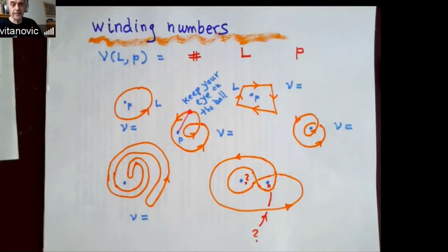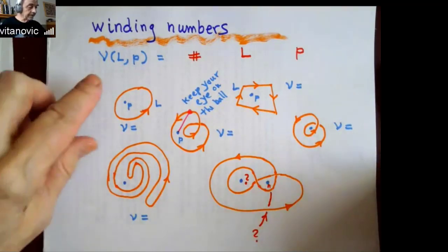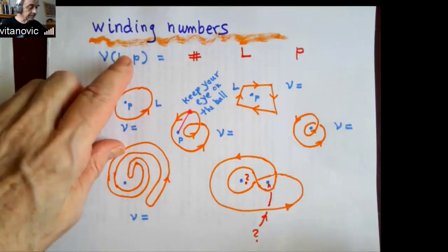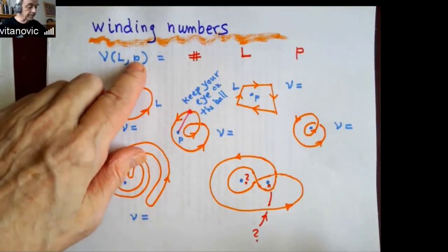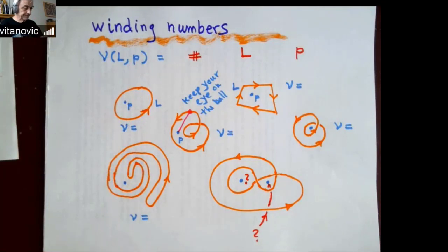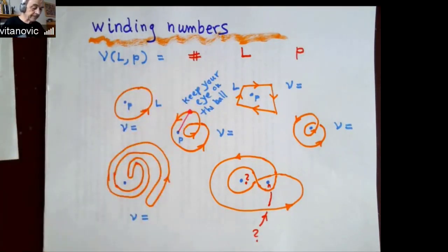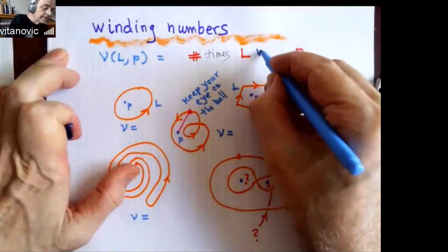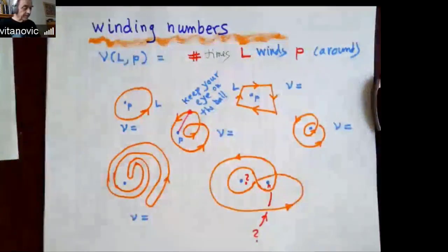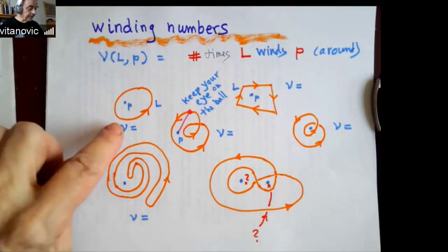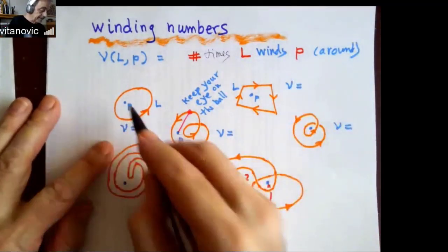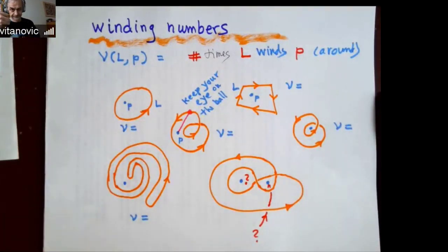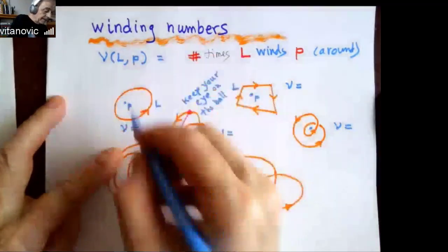It's a notion of winding number. So the interpretation of this integer μ is: given a curve in a plane L — some loop or loops — and given a point P, this integer is the number of windings the loop L winds around P. Here are examples. If you have a simple curve, with a point P in a plane and the loop runs around it once in an anti-clockwise manner, then this winding number is one.